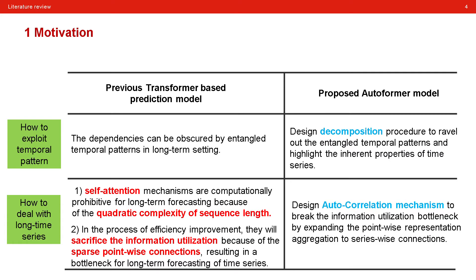The second is about how to deal with long-term series efficiently. In prior studies, the self-attention mechanisms are computationally prohibitive for long-term forecasting because of the quadratic complexity of sequence length. In the process of efficiency improvement, they will sacrifice the information utilization because of the sparse pointwise connections, resulting in a bottleneck for long-term forecasting of time series. In this study, they designed autocorrelation mechanism to break the information utilization bottleneck by expanding the pointwise representation aggregation to serieswise connections.